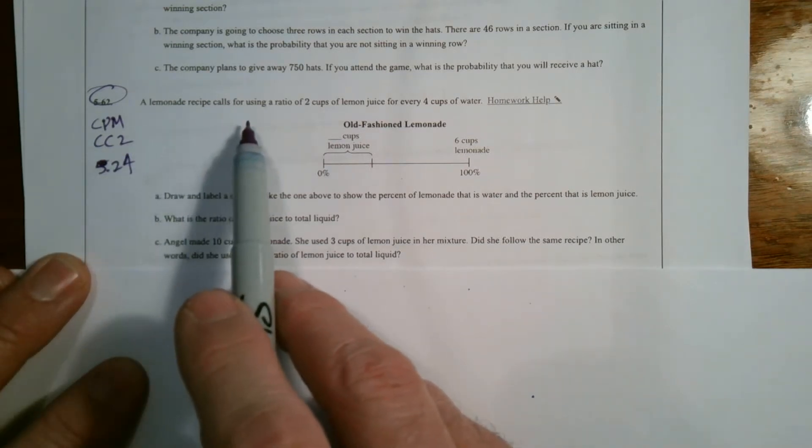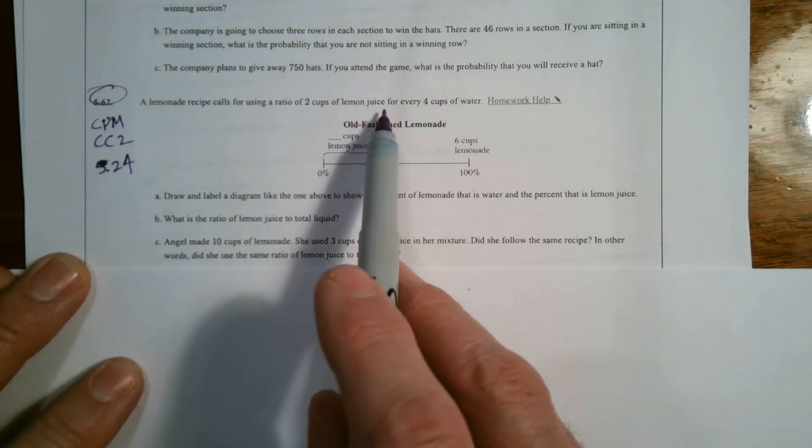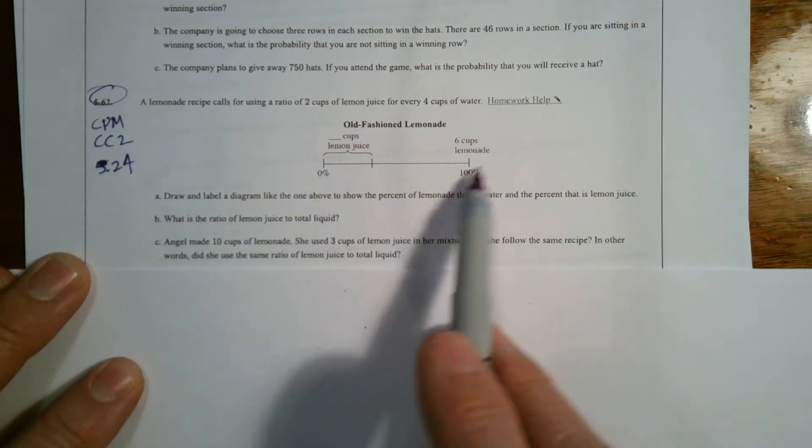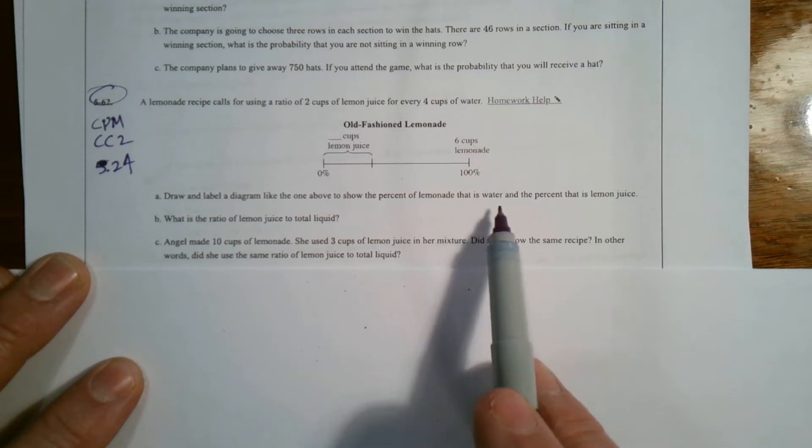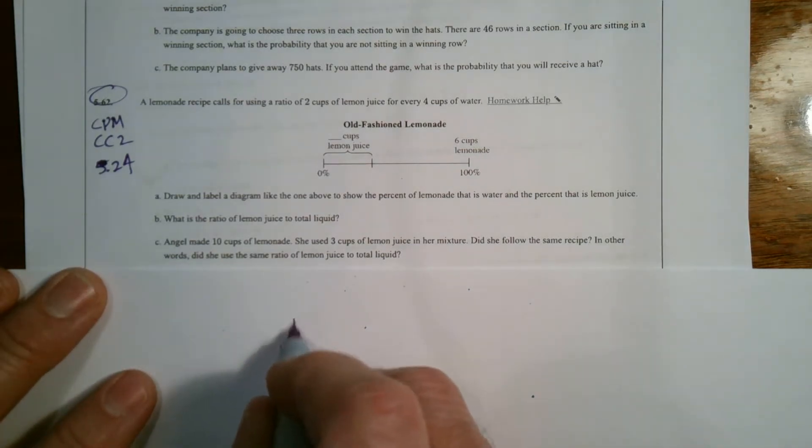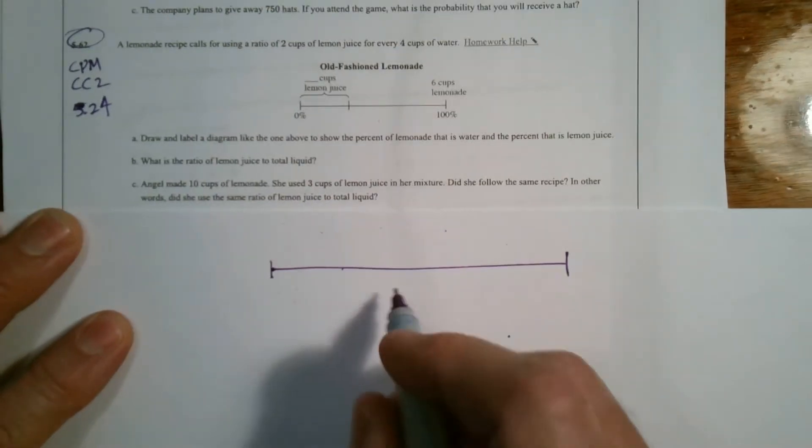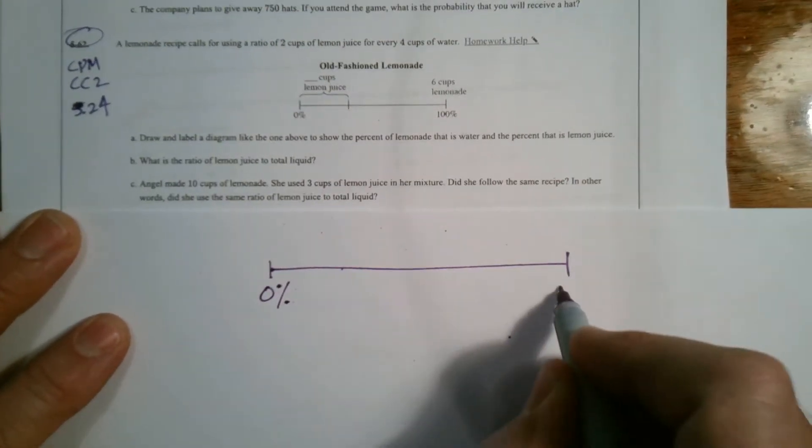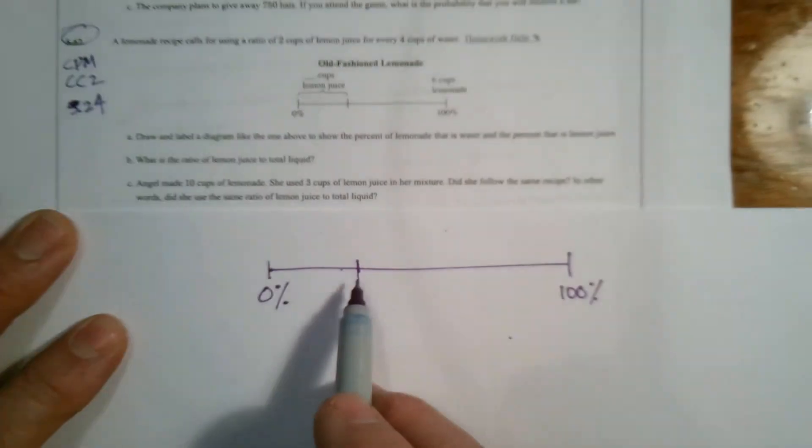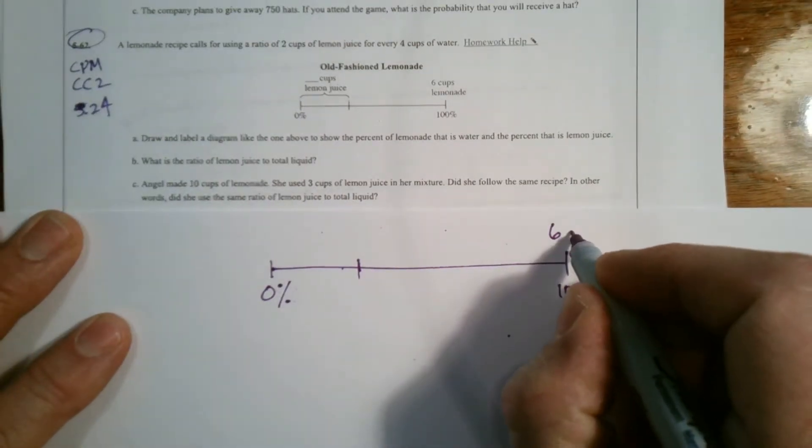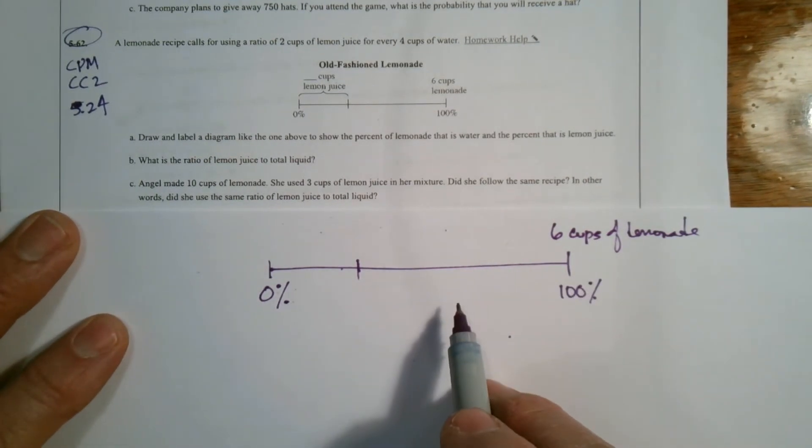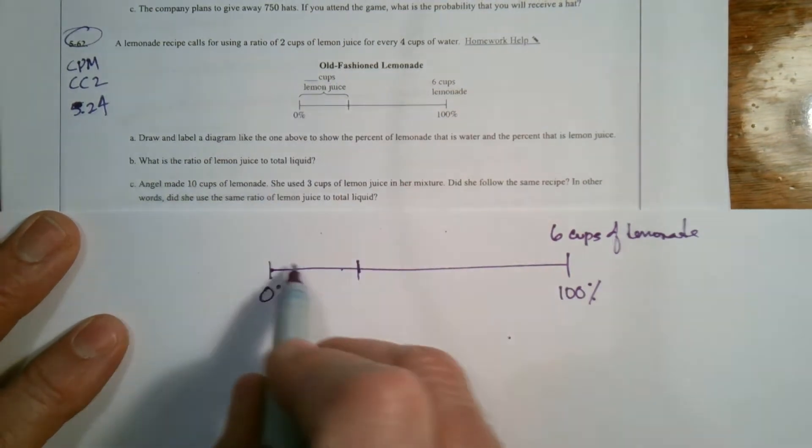So it says a lemonade recipe calls for using a ratio of two cups of lemon juice for every four cups of water. Draw and label a diagram like the one above to show the percent of lemonade that is water and the percent that is lemon juice. So I'm going to redraw our number line so it's easier to see here.